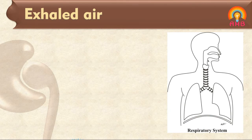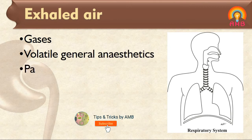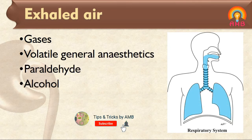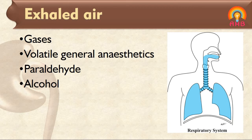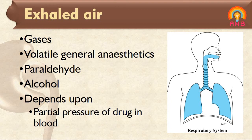The next route of elimination is exhaled air. Gases and volatile liquids like general anaesthetics, paraldehyde, and alcohol are eliminated by the lungs. We can detect the smell of alcohol in a person who drinks alcohol in his exhaled air. Transfer of gas or vapour in alveoli mostly depends upon its partial pressure in the blood.